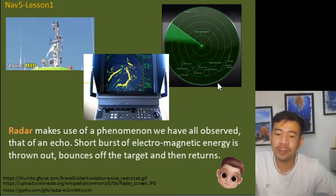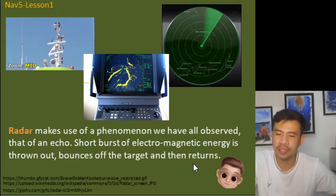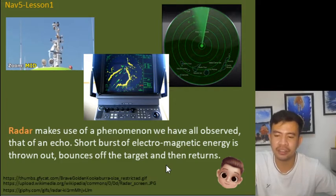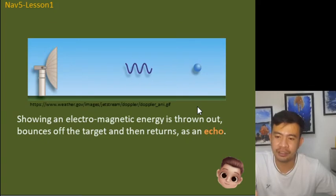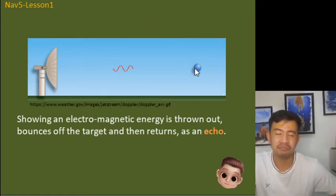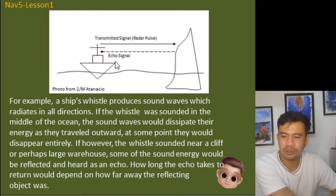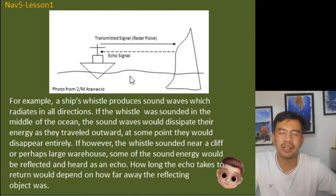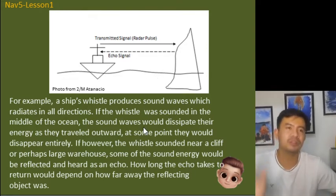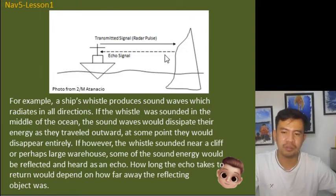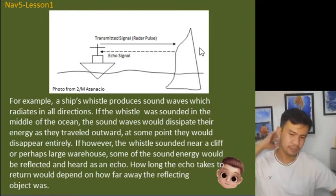Radar makes use of the phenomenon we call echo. There is a short burst of electromagnetic energy which is thrown out, bounces off the target, and then returns. Radar transmits electromagnetic energy, and upon hitting a target, the wave bounces back — that echo is received. It is similar to a sound signal: if the wave hits nothing, it will move and dissipate, but if it hits a target, it echoes back.